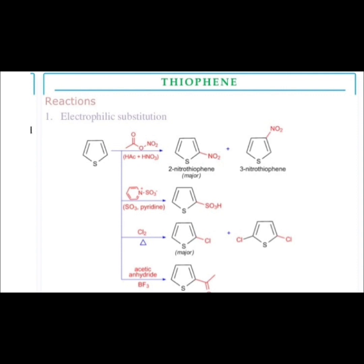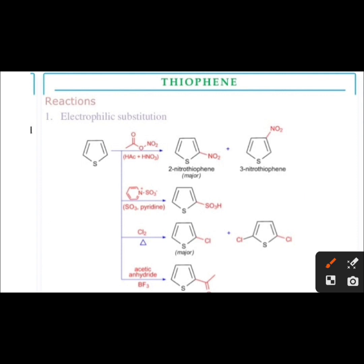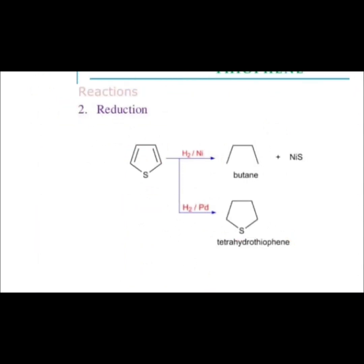Now see the electrophilic substitution reactions of thiophene. First is the nitration reaction, second is the sulfonation reaction, third is the halogenation reaction. In the sulfonation reaction, the SO3H group is attached at the second position. In the halogenation reaction, the major product has a chlorine group at the second position; the minor product has two chlorine groups attached. Last is the acetic anhydride reaction — the acetic anhydride group attaches at the second position.